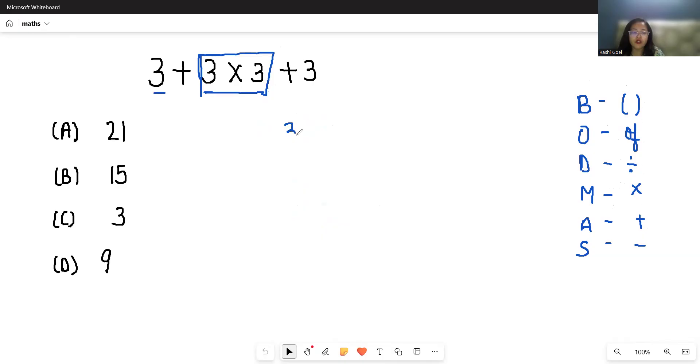First we will solve 3 × 3. Write 3 + 3 × 3 is 9 + 3. Now there is one sign, you can simply add them. 3 + 9 is 12, 12 + 3 is 15.